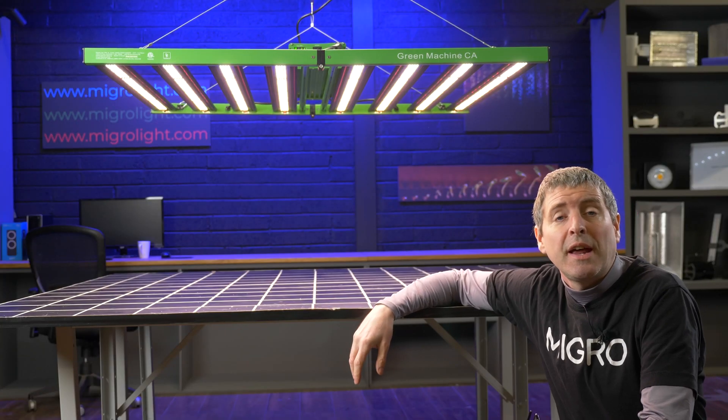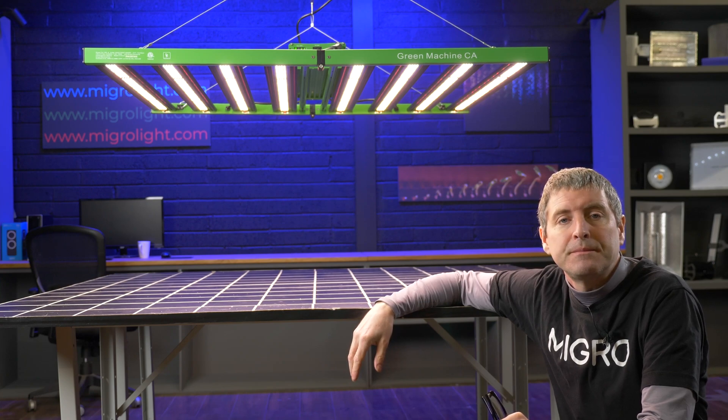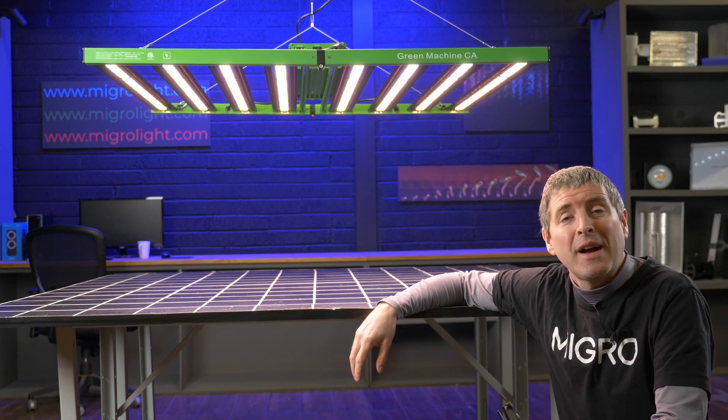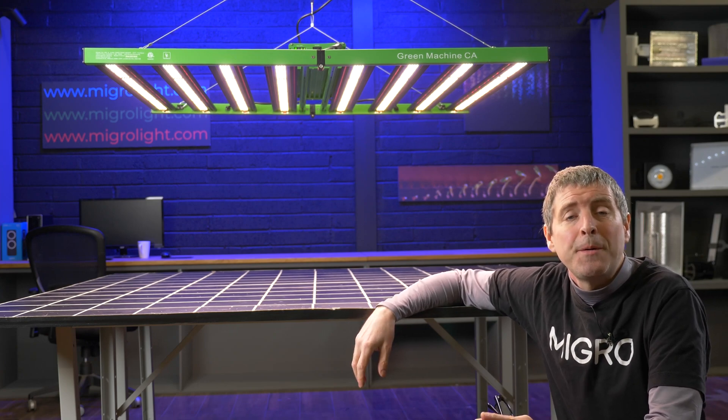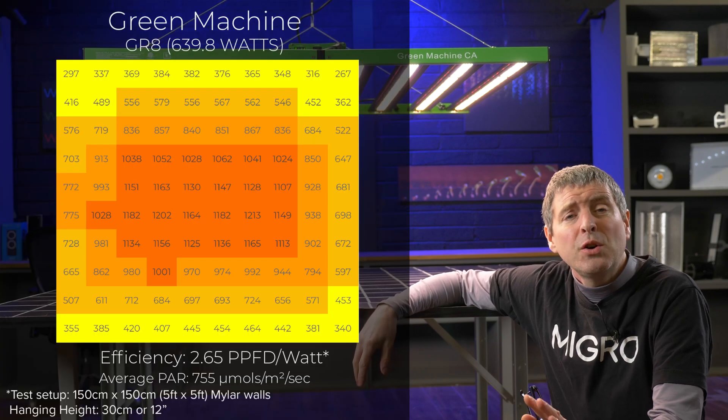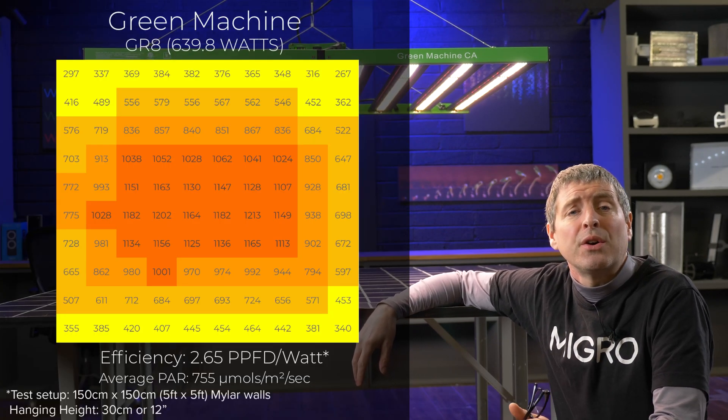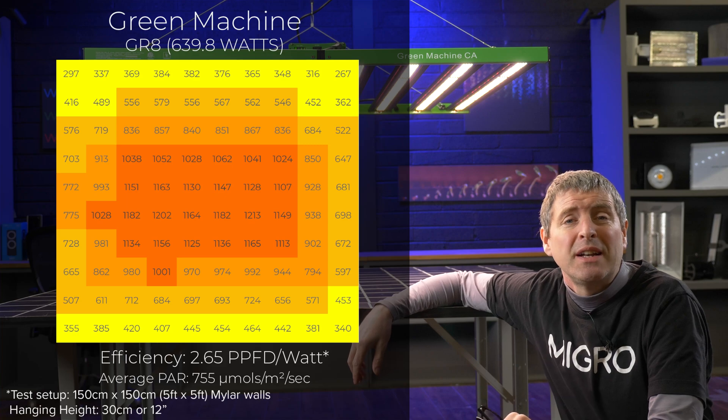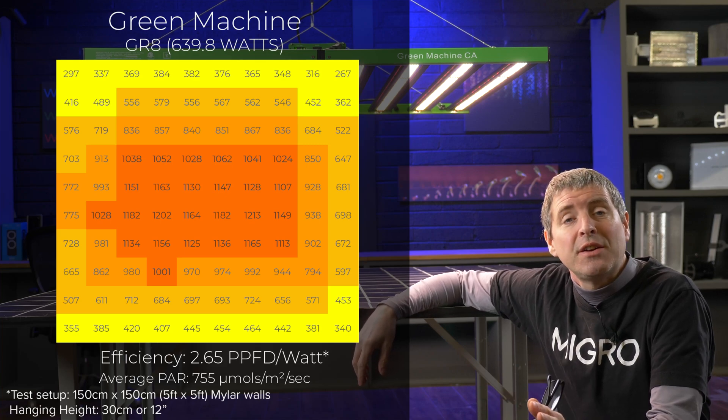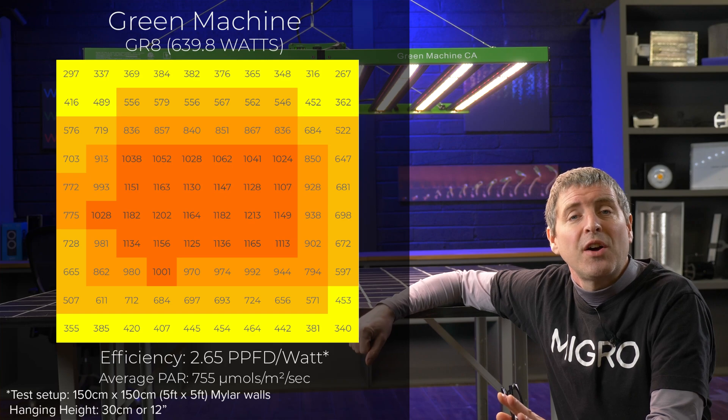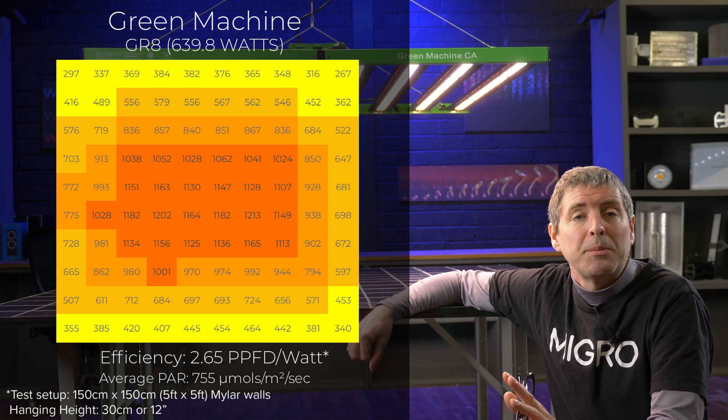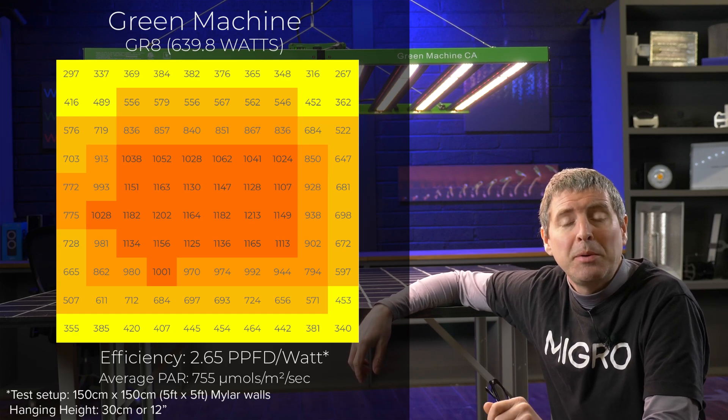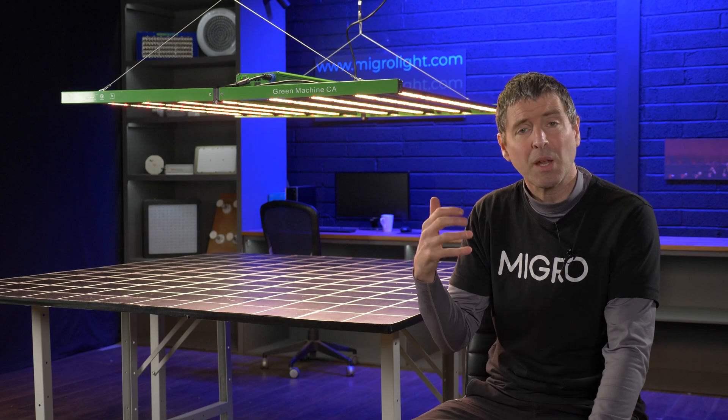I also hung the light and repeated the test in a five by five at a lower hanging height down at 12 inches or 30 centimeters. And although the center measurements are around the 1200 micromole mark, if you're running with supplemental CO2, this would be perfectly acceptable. And it does deliver a really good average power of 755 micromoles per meter square per second, and a system efficiency of 2.65 micromoles per watt.